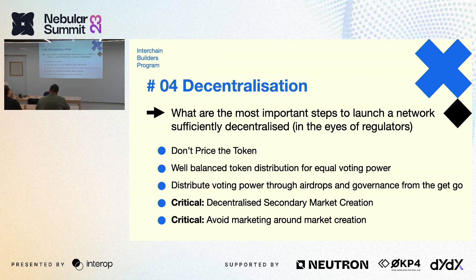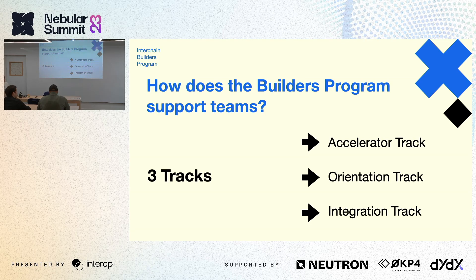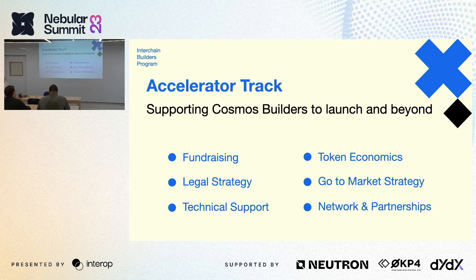That's a roundup of the decentralization considerations and the main obstacles for founders — things to watch out for that you might not otherwise be aware of. In terms of how the builders program actually supports teams, we currently do this through three different tracks. The primary one is the Accelerator Track, where we support Cosmos builders from launch and beyond — supporting teams using the Cosmos stack, building their chain from fundraising through legal strategy, technical support, token design, and go-to-market strategy.